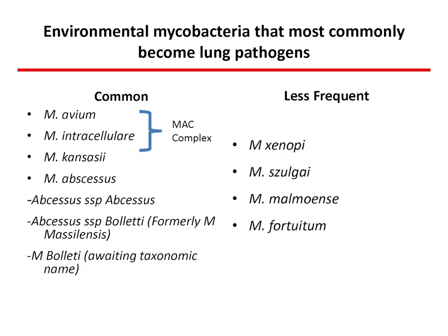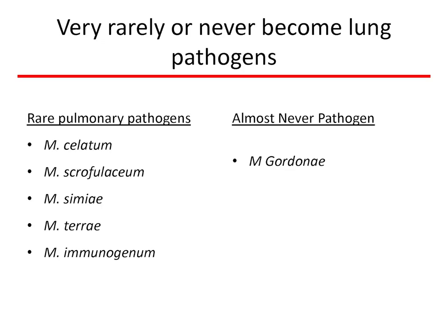The common mycobacteria that can become lung pathogens are: M. avium intracellulare (MAC complex), Kansasii, M. abscessus — also called abscessus sensu stricto — abscessus boleti (formerly M. massilensis), which is the particular one implicated in CF transmission, and M. boleti awaiting taxonomy. There are more than 140 mycobacteria species around us. Less frequent ones like Sinopi, Zulgai, Malmoense, and Fortuitum can occasionally cause trouble. Gordonae is essentially never a pathogen.